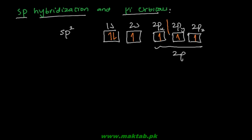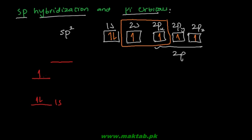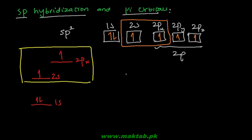Now let's take 1 p orbital and 1 s orbital and hybridize them independently. They definitely have different energies — s energy is lower. In 1s there are 2 electrons residing, then 1 in 2s and 1 in 2p. Now these two orbitals, once combined together, are going to give two independent and degenerate orbitals.